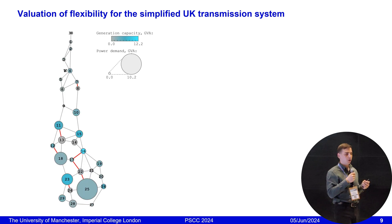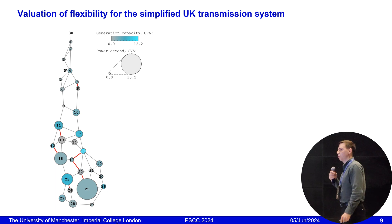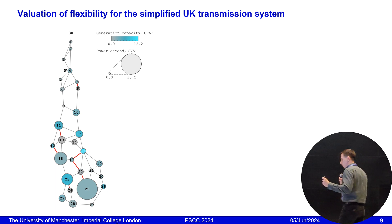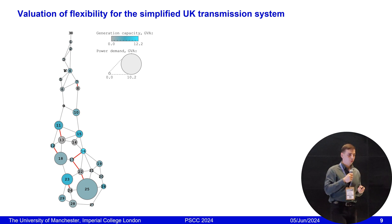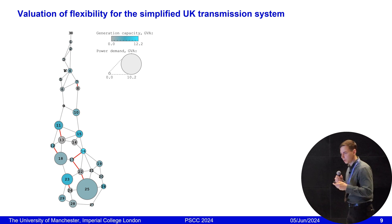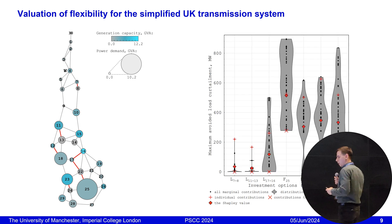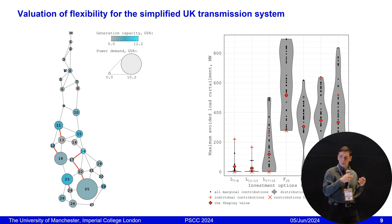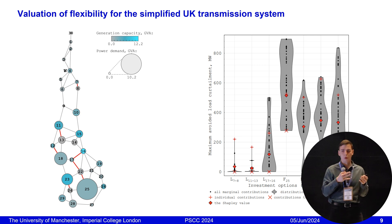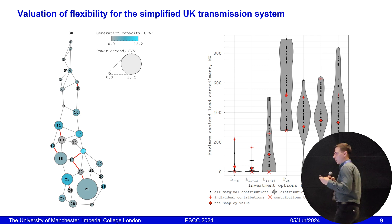Finally, to test the scalability of our tool, we applied it to a simplified UK transmission system with 30 buses. You can see the system visualized as a graph where the size of the nodes corresponds to the load located there — so we can see that the south of the UK has more load than the north. We made some pre-screening of investment options, selected the best investments, and solved the coalitional analysis. In this case, you may see that investment in flexibility at bus 25 in the south is the absolutely best option to prioritize. It is interesting to see how we can interpret this very complex problem and get more insights about our investment options.